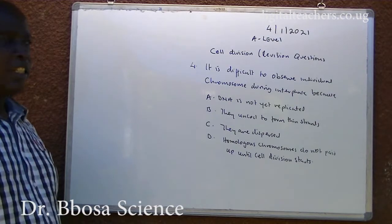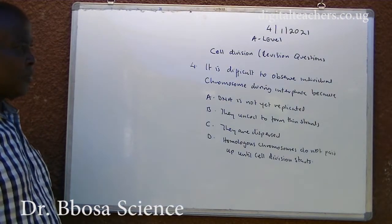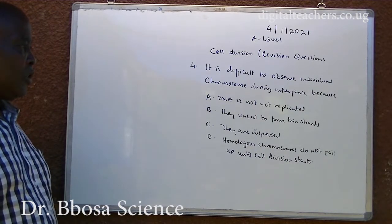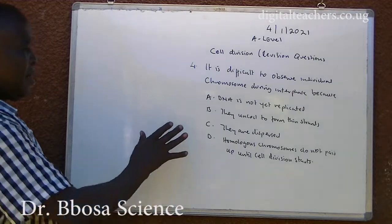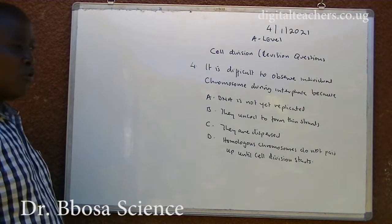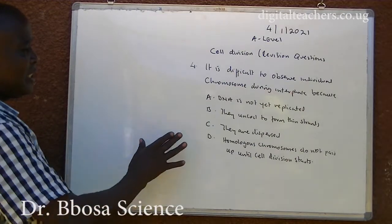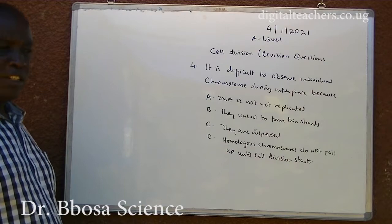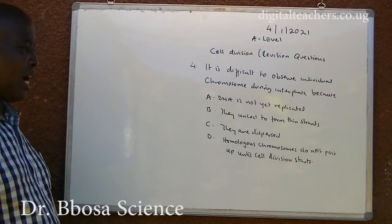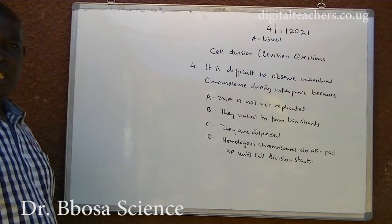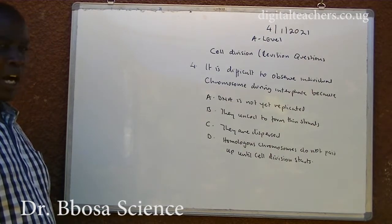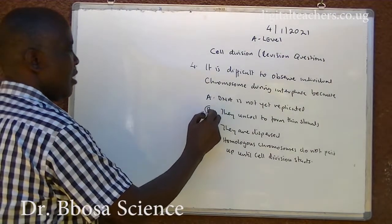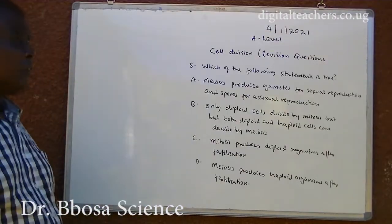Number 4. It is difficult to observe individual chromosomes during interphase because: A. DNA is not yet replicated. B. They uncoil to form thin strands. C. They are dispersed. D. Homologous chromosomes do not pair up until cell division starts. You can pause and answer. The answer is B.